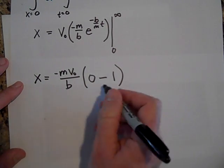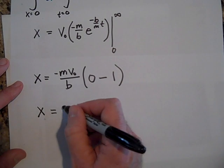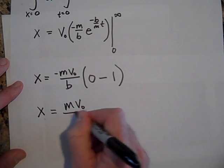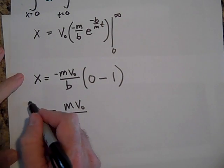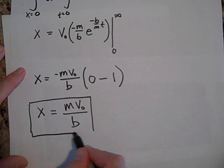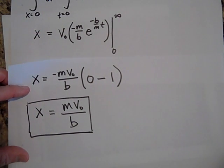And so, this looks like the total distance it's going to go. When I multiply those out, it's going to be m v naught over b. Apparently that's a distance. So this is the furthest it's going to go. M v naught over b.